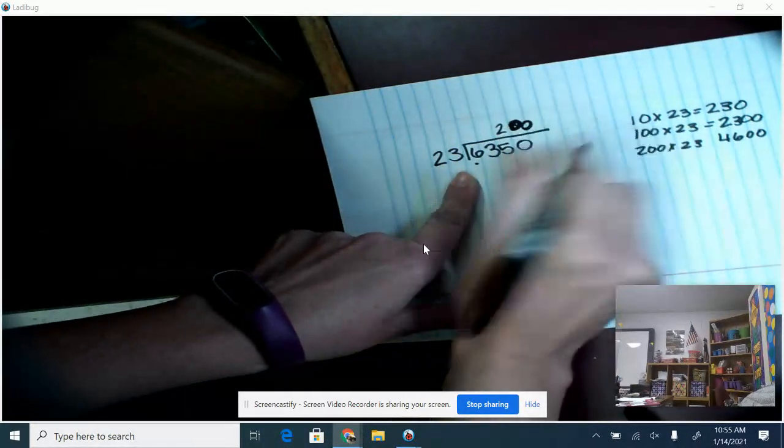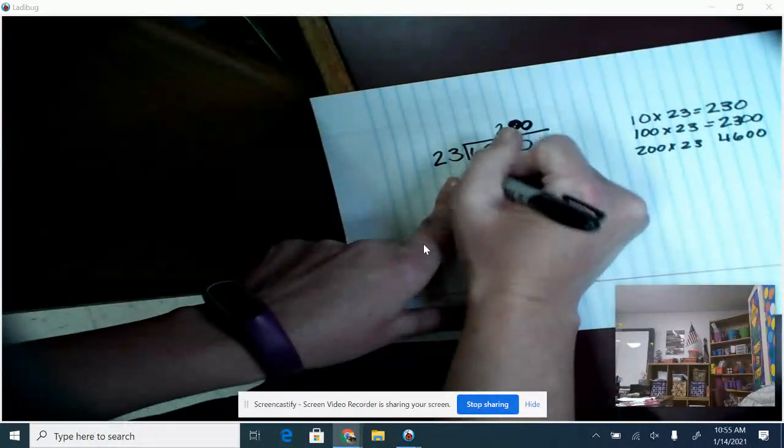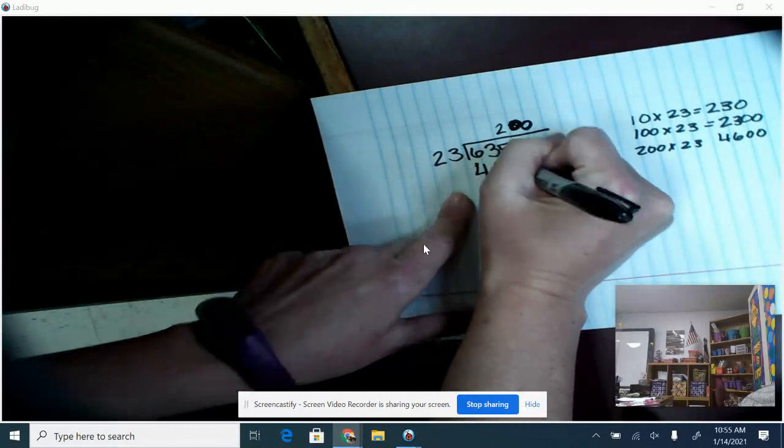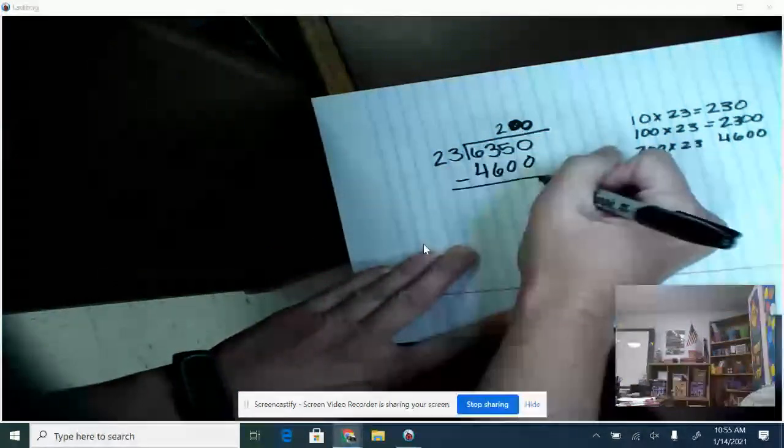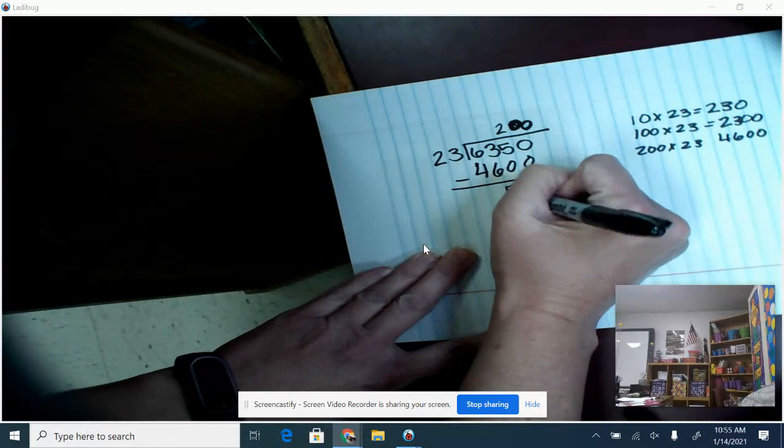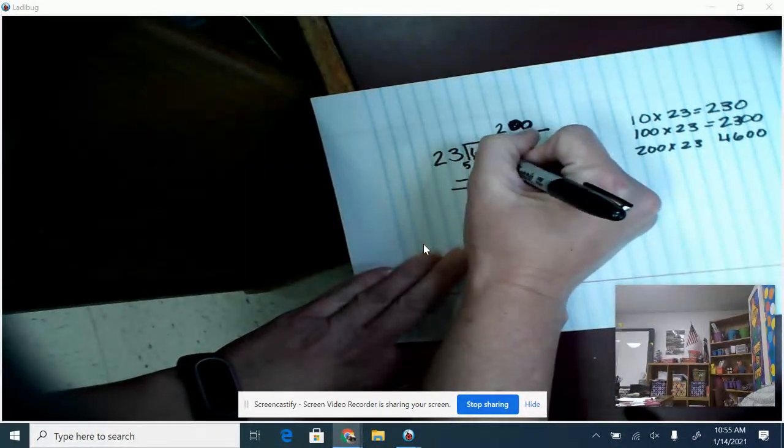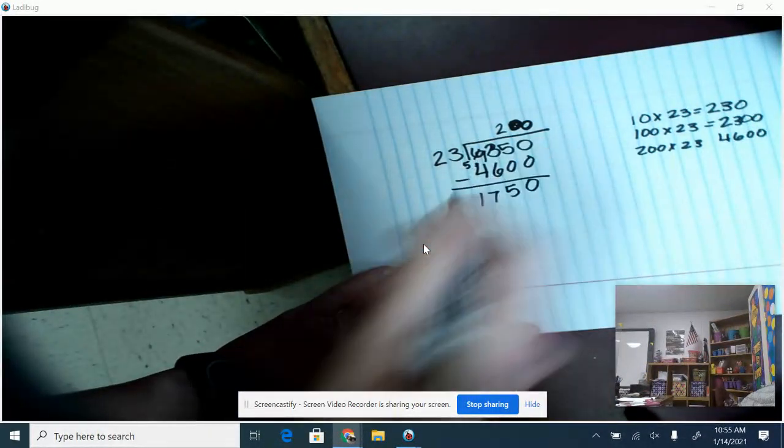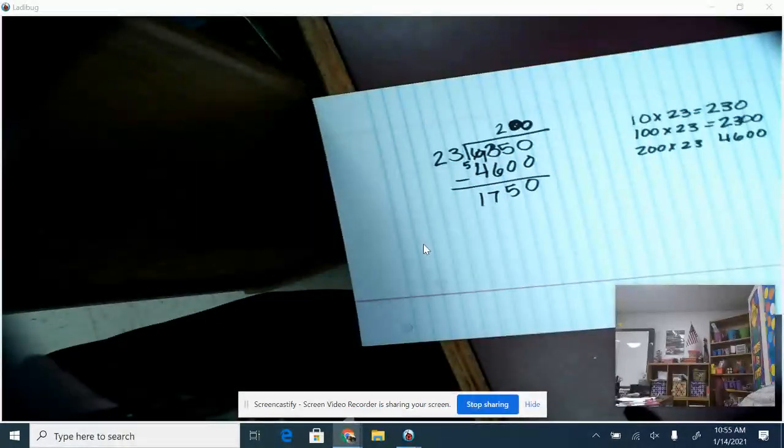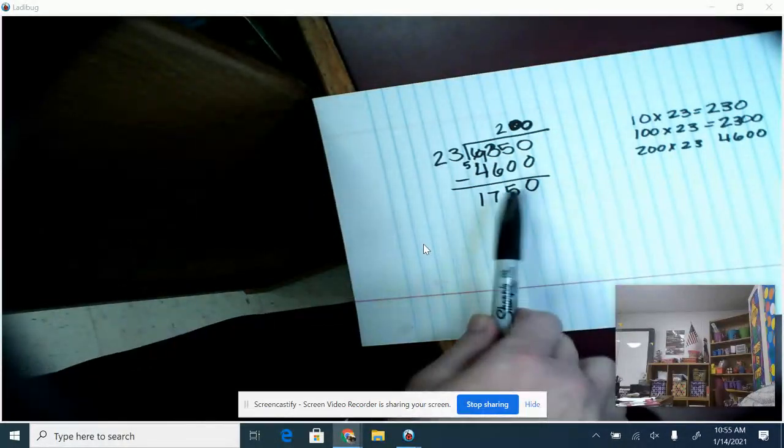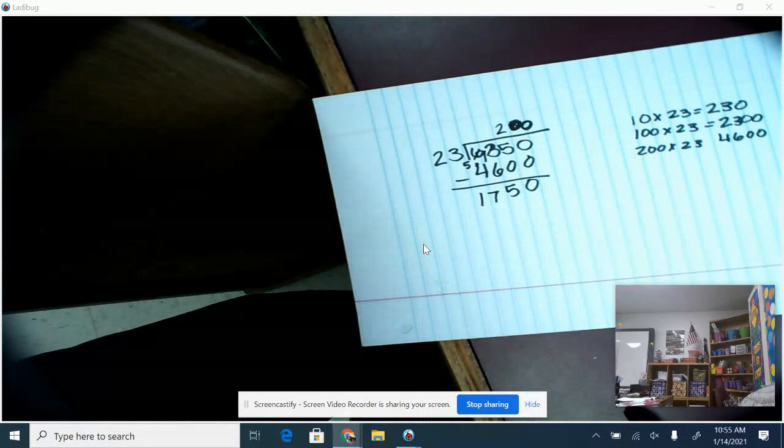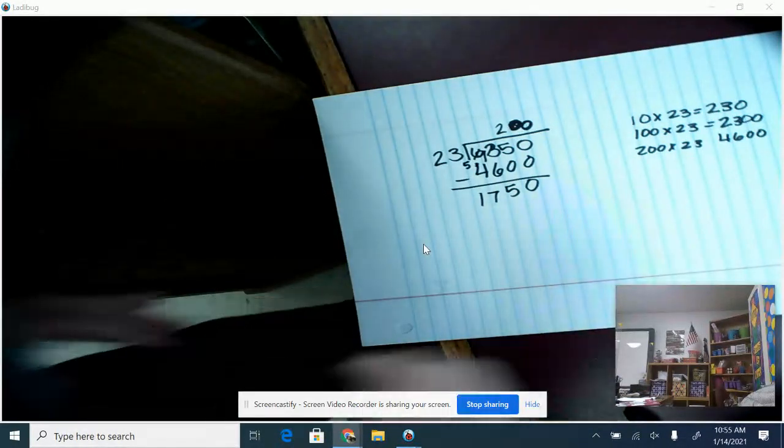So I've got 200 times 23, that gives me 4,600. Then I subtract, and then I have to do my regrouping here, so that gives me 1,750. So I don't have enough to make another group of 100, so what I'm going to do is I'm going to try 50.